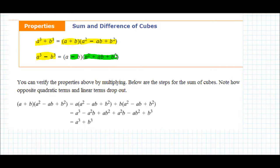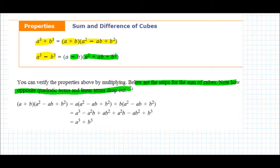We can verify these properties by multiplying them out — notice how a lot of things drop out. So you can either work this every time or just memorize the equations. The sum of cubes: a³ + b³ = (a + b)(a² - ab + b²). The difference of cubes: a³ - b³ = (a - b)(a² + ab + b²). Write that down — pause if you need to — make sure you understand it before we move on.